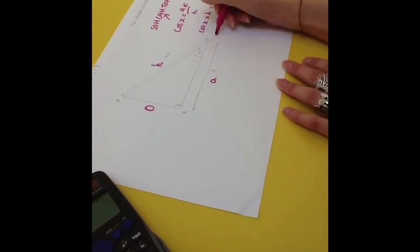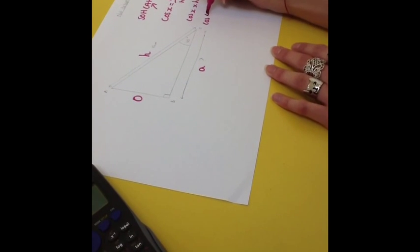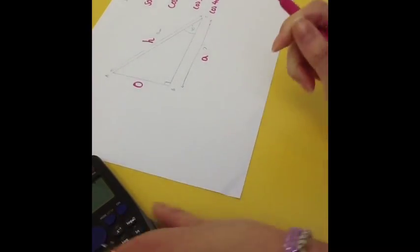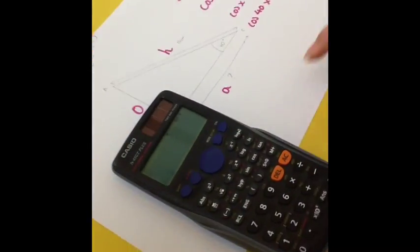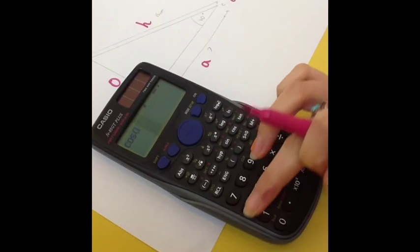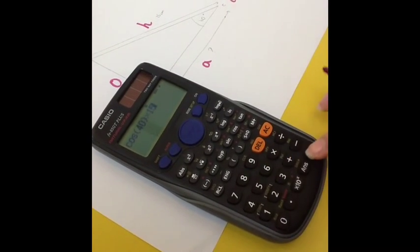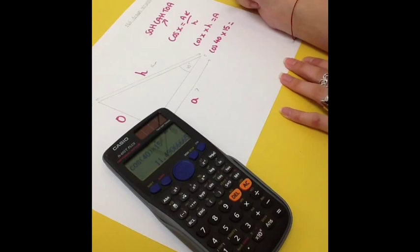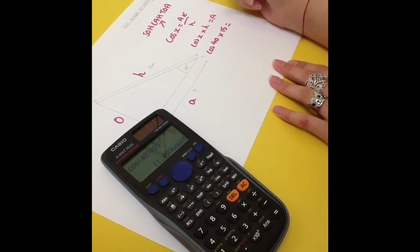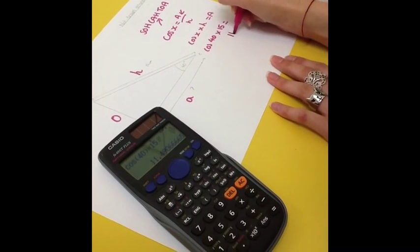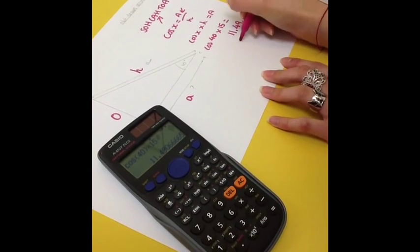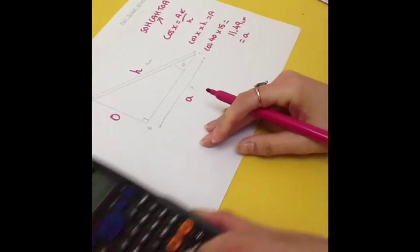Now, put the values in. So, cos 40 times 15 equals. Now, let's work that out in the calculator. We get 11.49, etc. And you round that up to two decimal places. So, it will give you 11.49 centimetres equals side a.